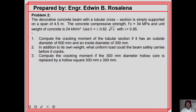Problem number two: a decorative concrete beam with a tubular cross section is simply supported on a span of 4.5 meters. The concrete compressive strength f'c equals 34 MPa and unit weight of concrete is 24 kN/m³. Use FR = λ × 0.62 × √f'c, with λ = 0.85. Question one: compute the cracking moment if the outside diameter is 600 mm and inside diameter is 300 mm. Question two: in addition to its own weight, what uniform load could the beam safely carry before it cracks?